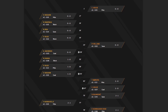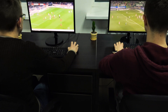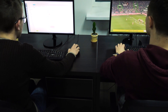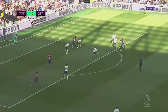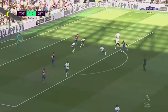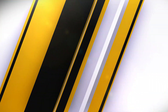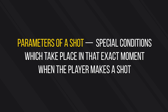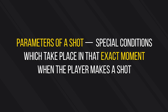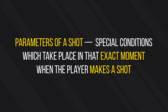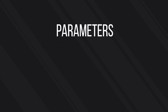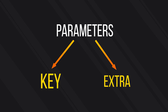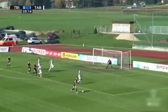Then statisticians insert the key parameters of a shot — they take into account many of them. Parameters of a shot are special conditions which take place at the exact moment when the player makes a shot. They can be divided into key parameters and additional parameters.